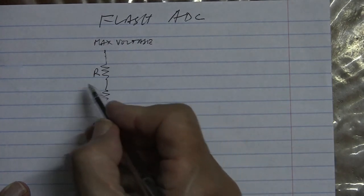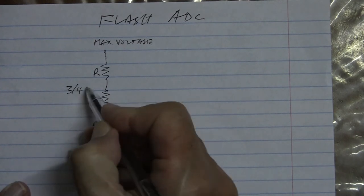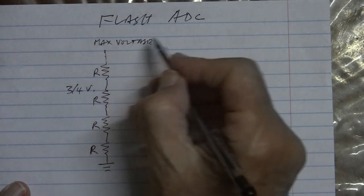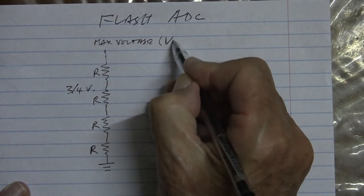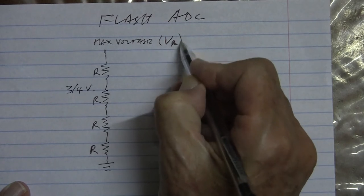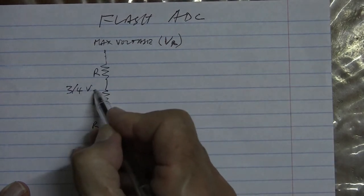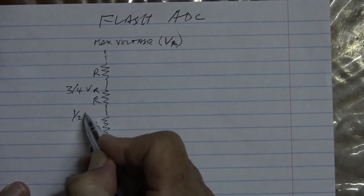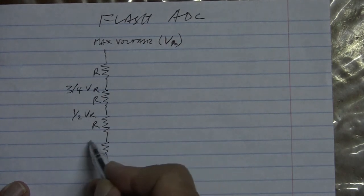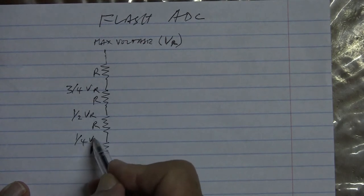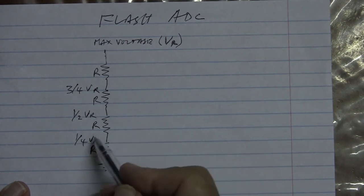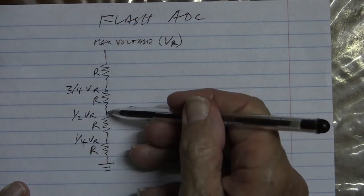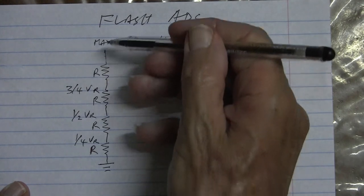So here we are going to have three quarters. We call the maximum voltage VR or V reference. So we are going to have three quarters because there are four of them. Here we have a half and down here we have a quarter. So whatever VR is maximum voltage we will have a quarter of it here, a half of it here, three quarters of it there and the full thing there.